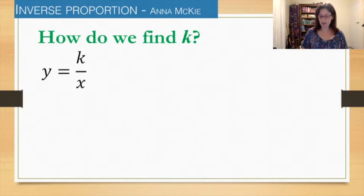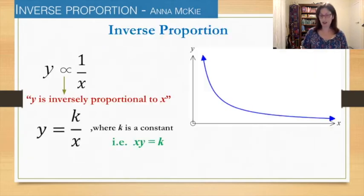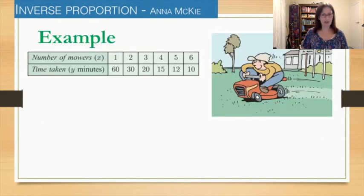If that's our equation, how do we get k on its own? How do we isolate it? You multiply through by x. So that's how you would find the k constant.